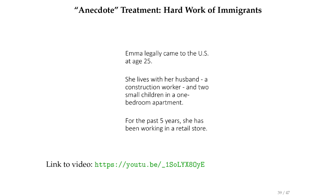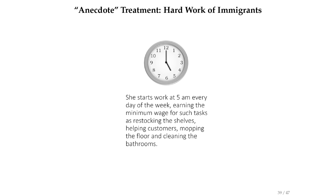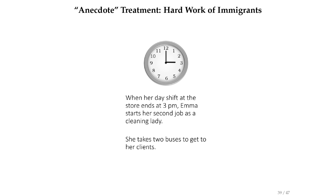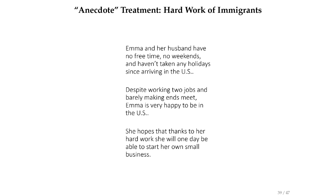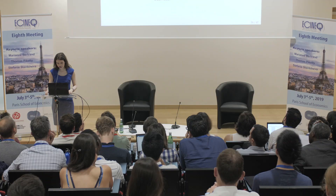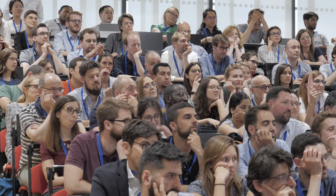Finally, the hard work treatment is really an anecdote — not factual whatsoever — it's trying to strike an emotional chord. The anecdote shows a day in the life of a very hardworking immigrant. Emma legally came to the US at age 25, lives with her husband, works two shifts, gets up very early, goes to a retail store job, then another job, takes public transportation, goes home, helps her kids. After the kids go to bed, she stays up to take online courses because she wants to start her own small business. It's the entrepreneurial, hardworking immigrant — a bit like what they call a Schrödinger's immigrant: they're lazy, but they'll also steal your job.